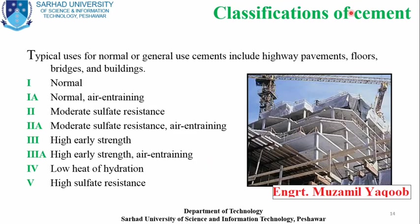Now let's discuss the classifications of cement. Generally we have five categories, which are further divided into subcategories. Type I is ordinary Portland cement; Type IA is normal air-entrained cement. Then comes moderate sulphate resistance and moderate sulphate resistance air-entrained. Type III is high early strength; Type IIIA is high early strength plus air-entrained. The last two are low heat of hydration and high sulphate resistance.